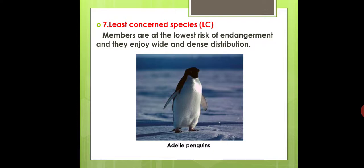The seventh category is Least Concerned Species, abbreviated as LC. Members are at the lowest risk of endangerment and they enjoy wide and dense distribution. An example is penguins, which dwell in the polar region and come under least risk.